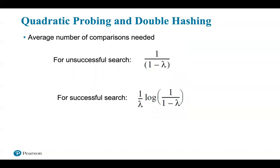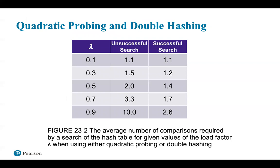For quadratic probing and double hashing, secondary clustering is not as serious as the primary clustering that occurs with linear probing. The average number of comparisons needed to search the probe sequence for a given key is shown in two equations. While the degradation in performance as lambda increases is not as severe as linear probing, you still want lambda to be less than 0.5 to maintain efficiency.